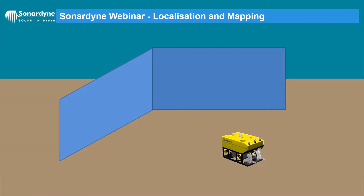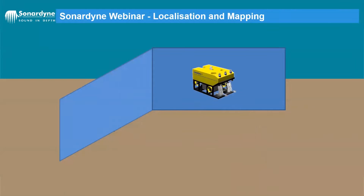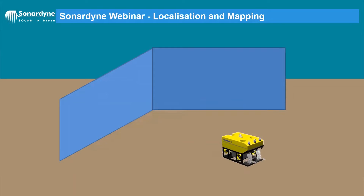The robot simultaneously localizes itself and maps the environment by bumping into things. But obviously, as subsea positioning specialists, if we sent our ROVs down and asked them to bump into walls or subsea assets, we wouldn't be very popular. We'd damage the ROVs, damage subsea structures — that would be an incident offshore. So we need to use the systems available to us in order to simultaneously localize and map our positions.